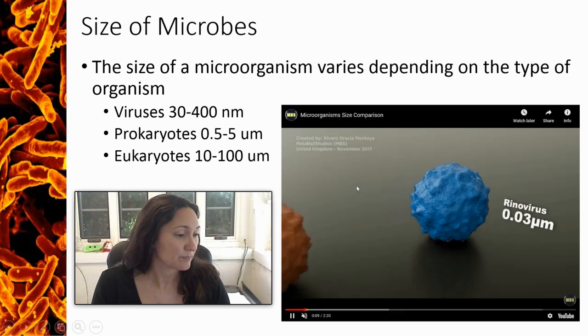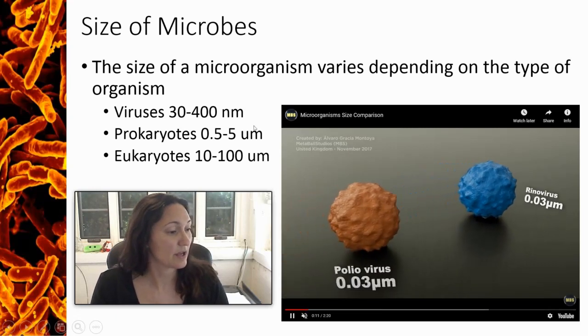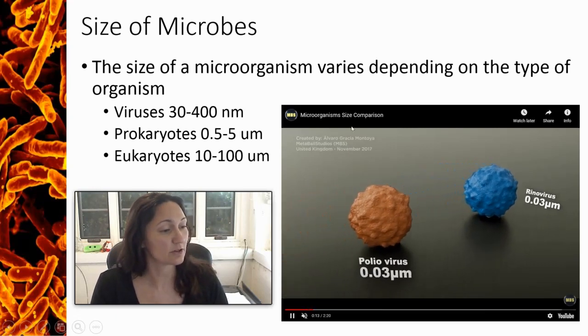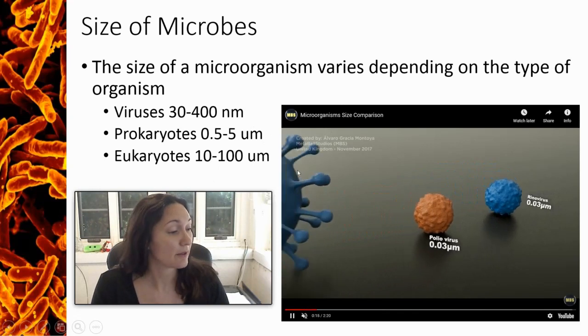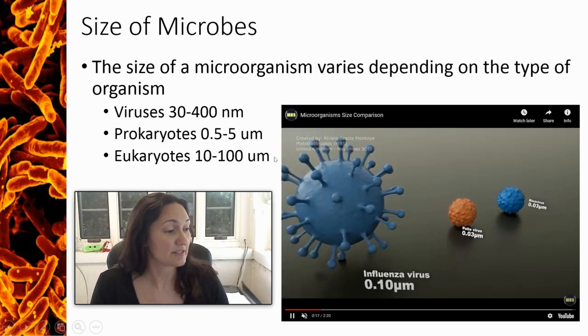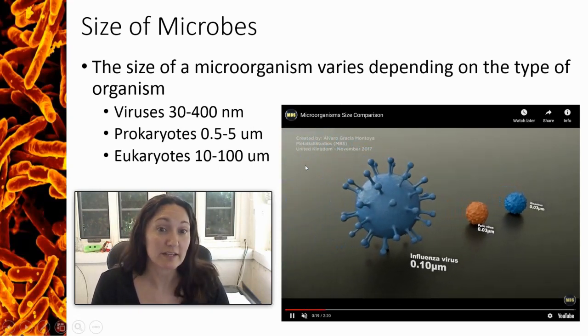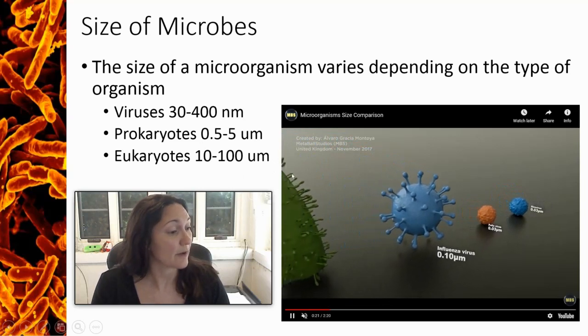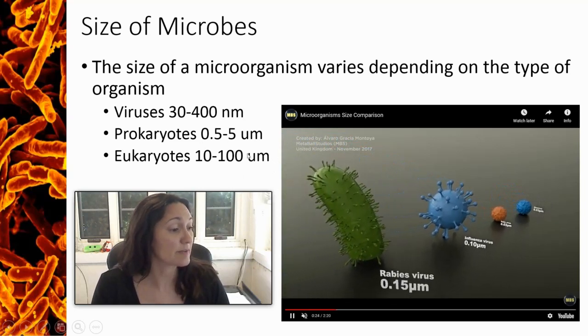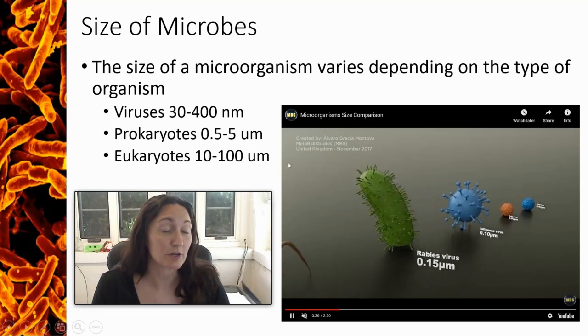As we move along the video, here's the poliovirus. Notice these look relatively similar, but now we're going to move up and we can see this is clearly a larger virus here. This is the influenza virus at about 100 nanometers, and here's the rabies virus at about 150 nanometers.